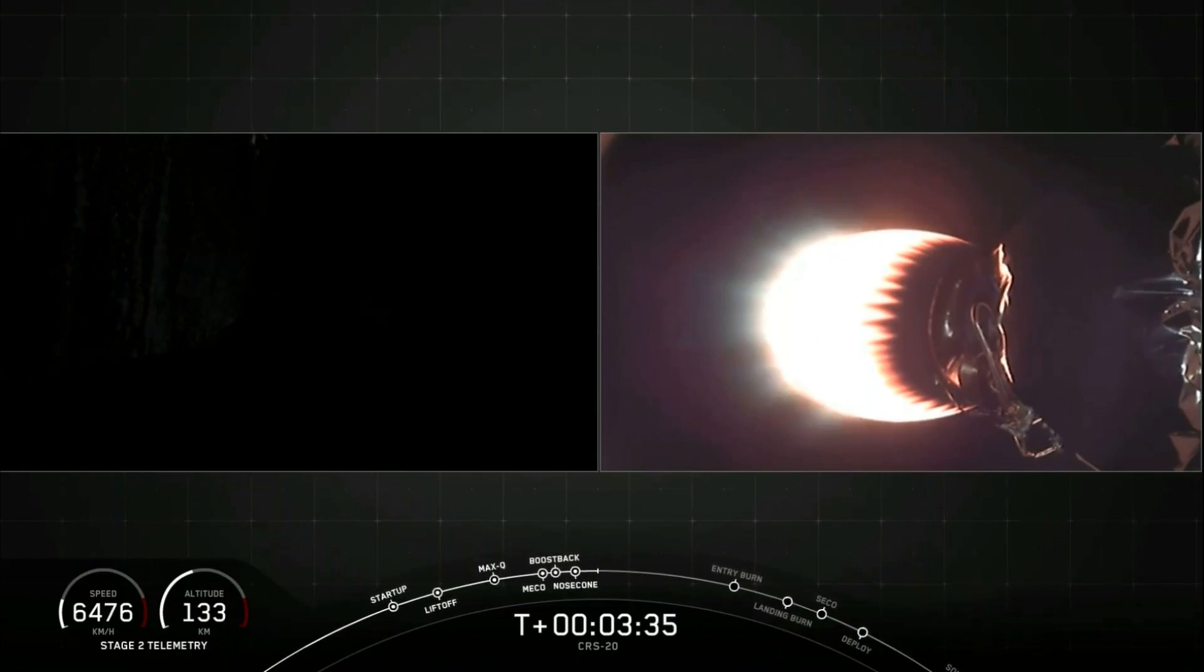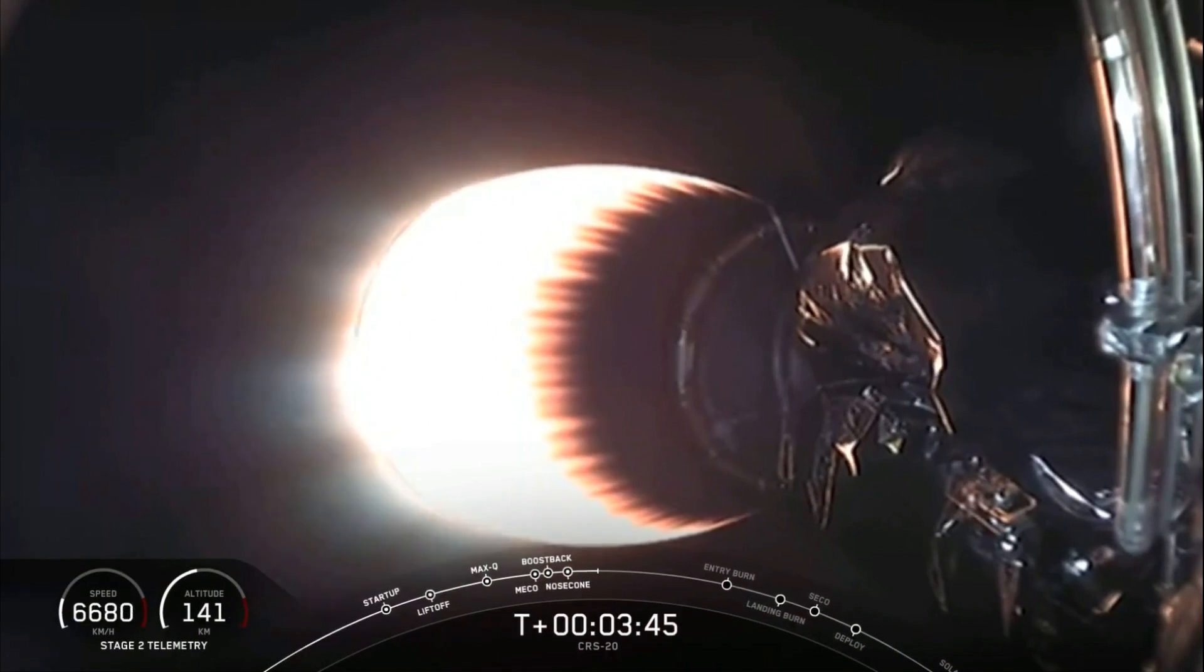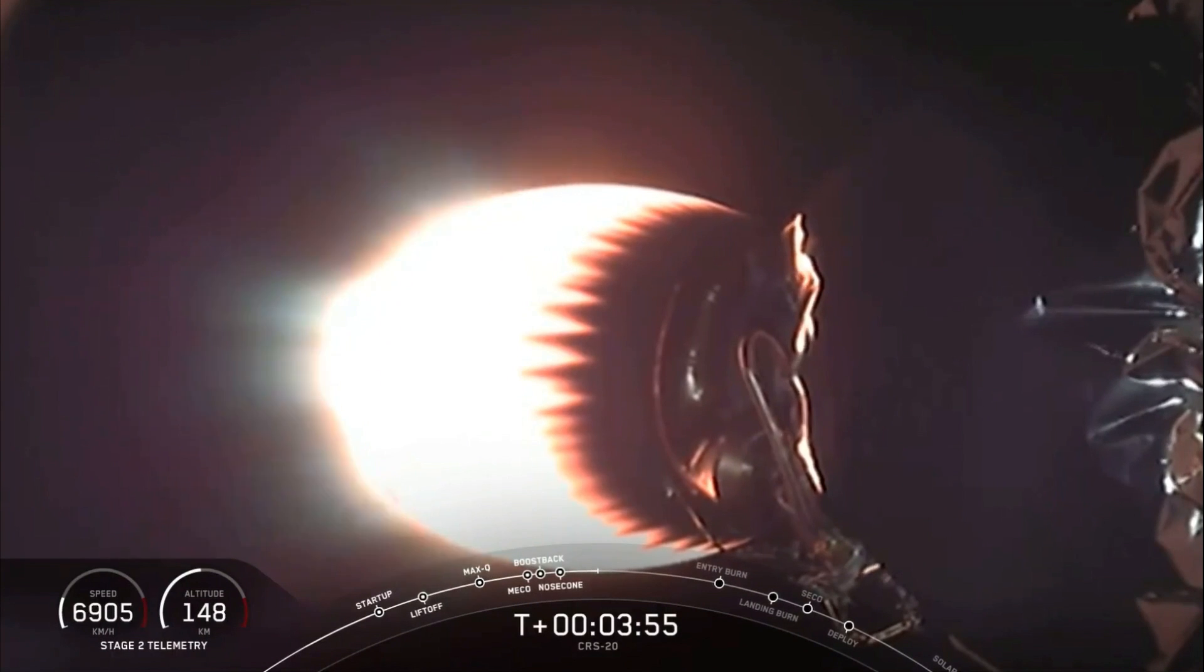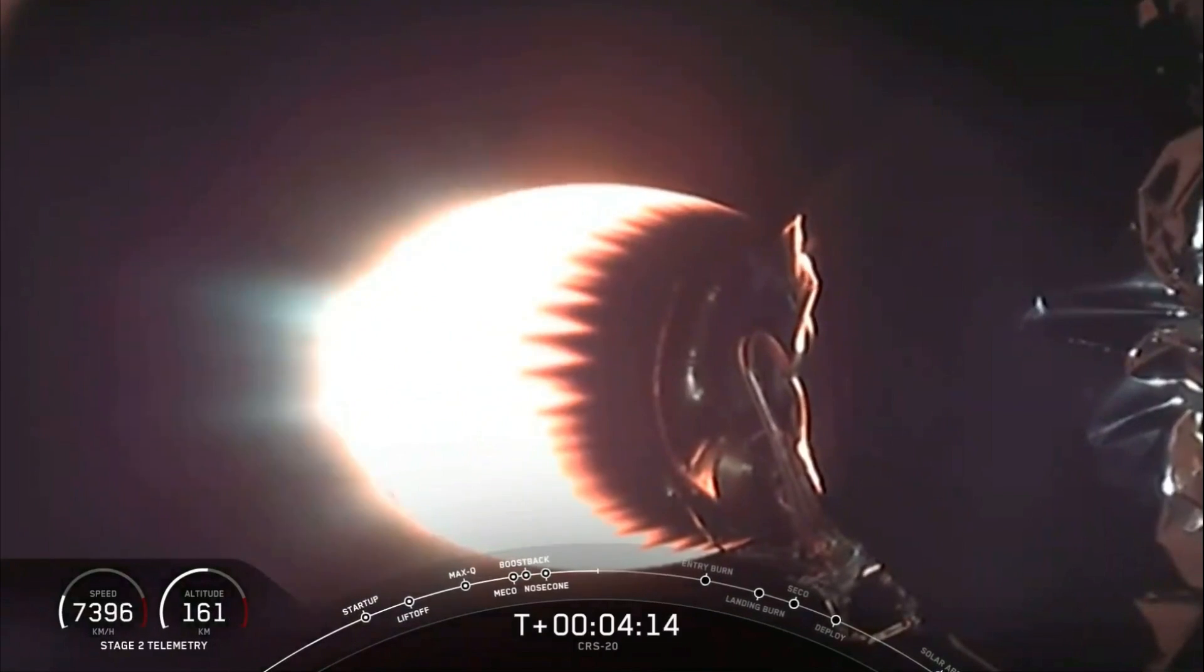Second stage looking good as Dragon is on its way to the International Space Station. In order to make its way back to Landing Zone 1, the first stage executes a series of three burns. The first of which you just saw is the boostback burn. And as Kate mentioned, this is meant to slow the rocket down and orient it for re-entry. It also helps Falcon 9 laterally return to the landing zone.